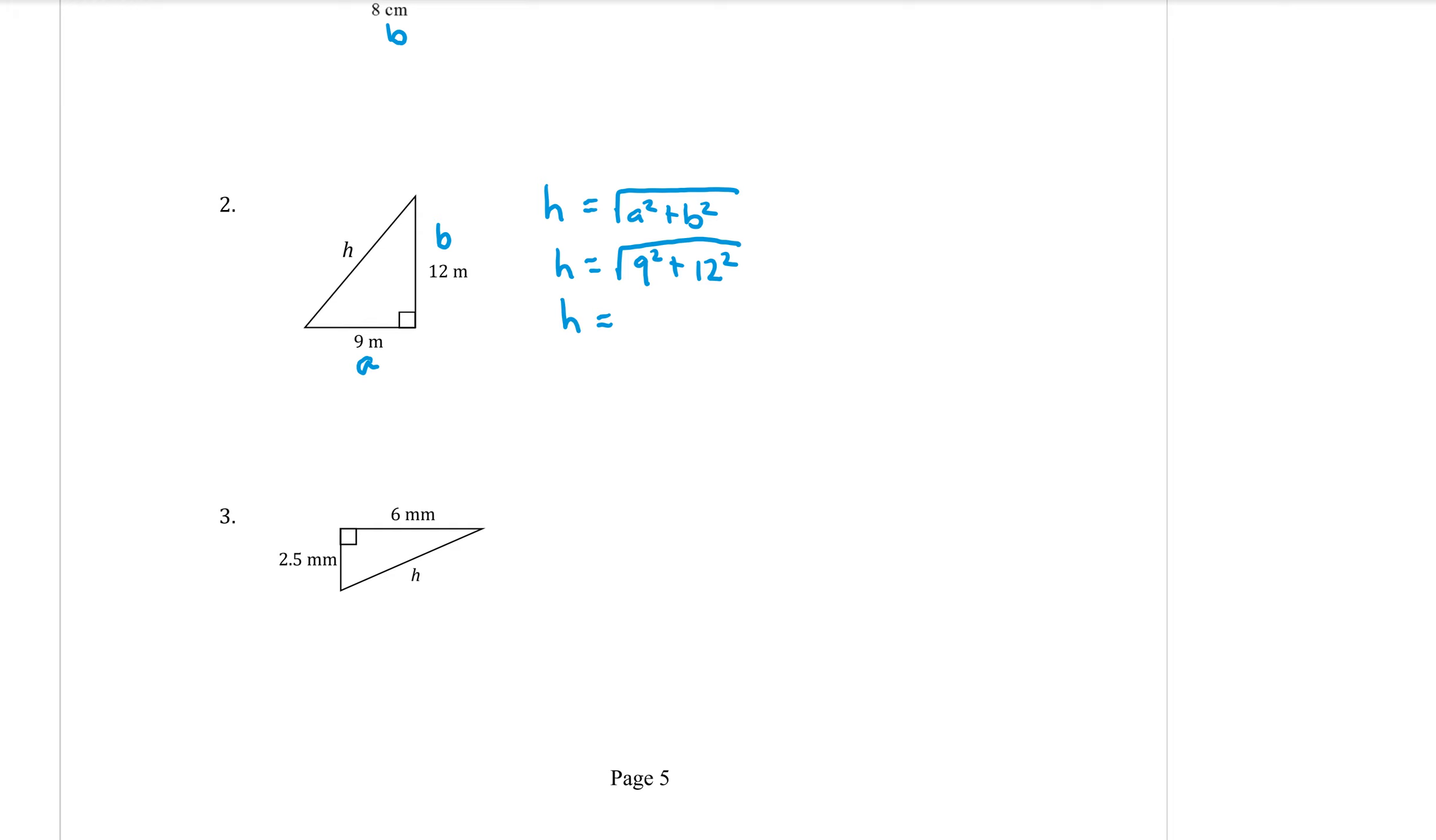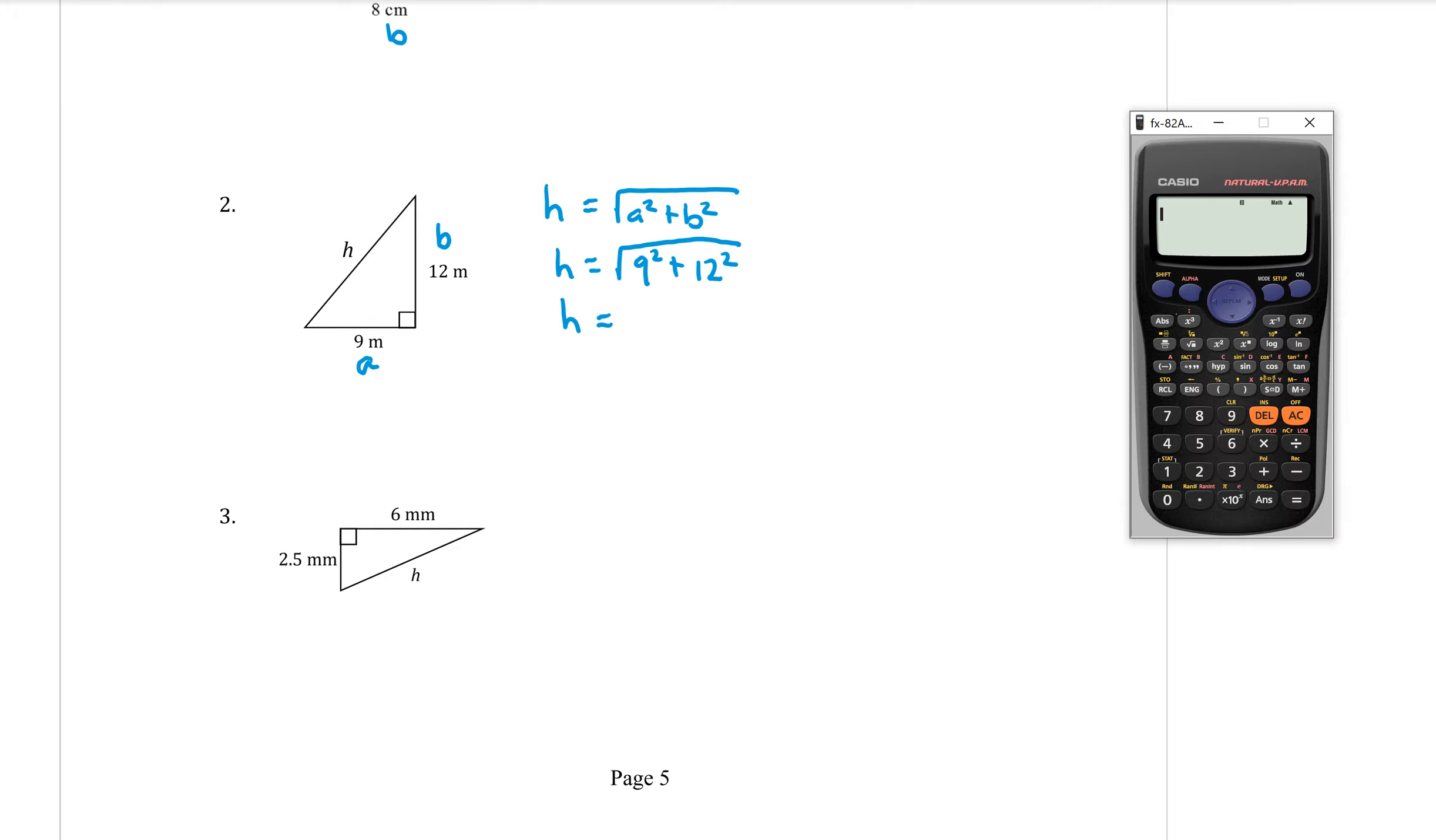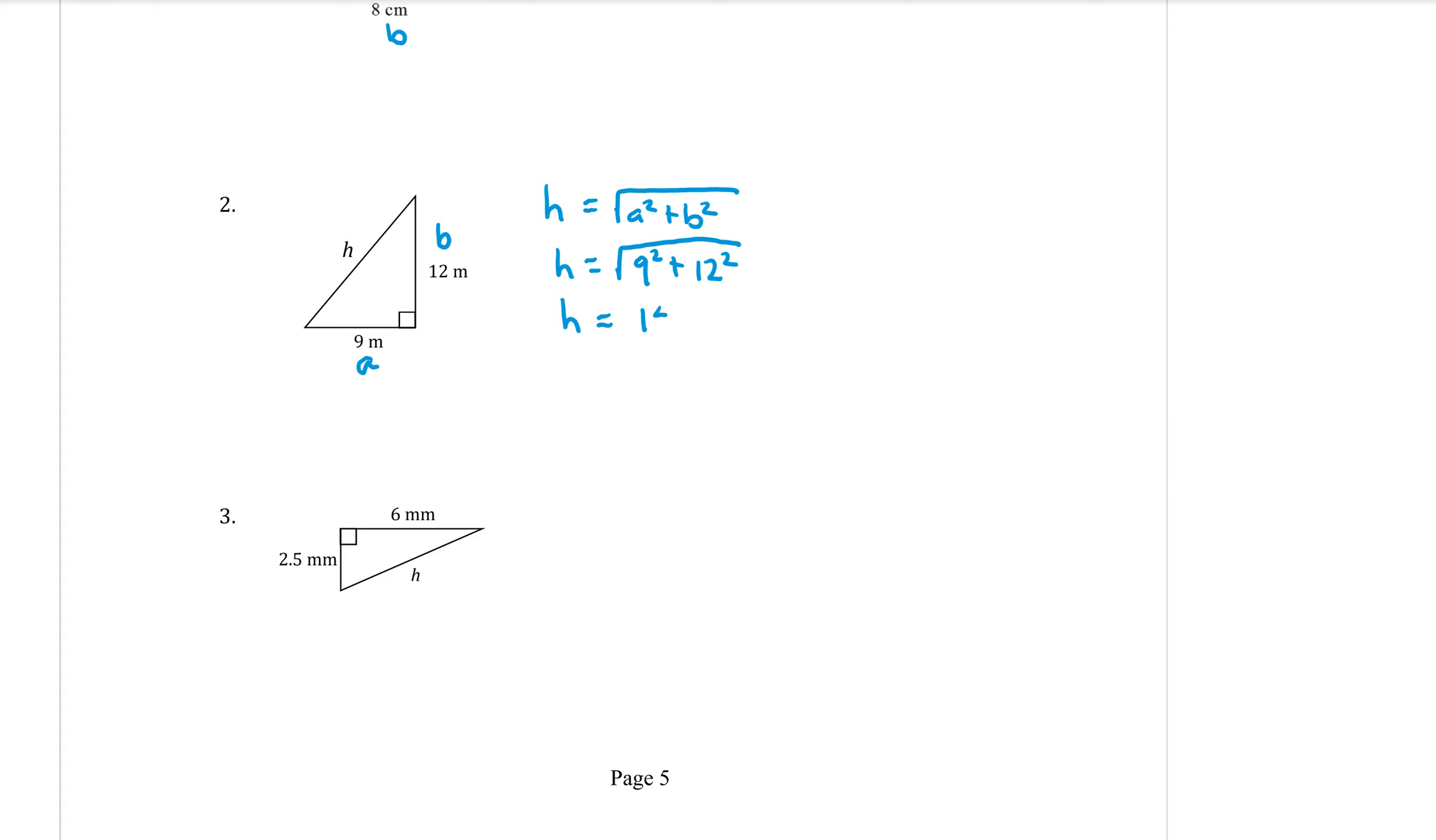Okay, now we're back to the calculator. We type at the square root sign. 9 squared plus 12 squared equals. Equals 15. And this time, the units are in metres. So 15 metres.